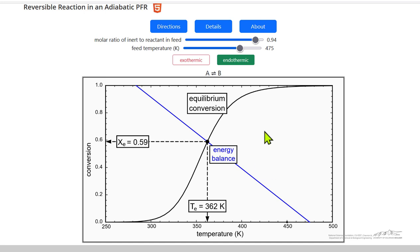And so this relation between equilibrium behavior and the energy balance allows us to determine conditions for equilibrium conversion if we go to equilibrium conversion in an adiabatic reactor.